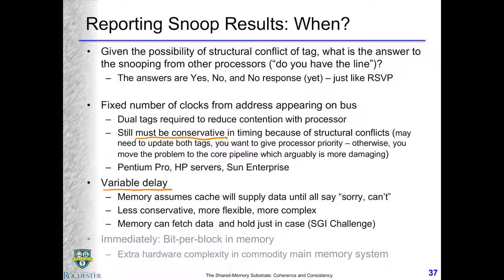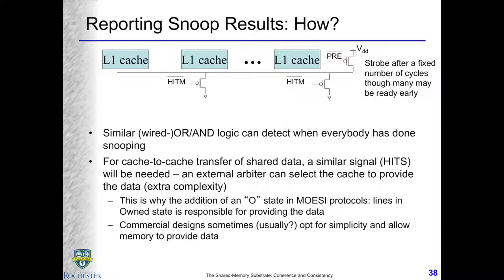There is a shared line that everybody uses to indicate they need more time. Your answer can be: yes I have it, no I don't have it, or no I don't know yet. The timing of when we get the result is not guaranteed to be like a fixed-latency cache check. In a data cache, you assume after a fixed number of cycles — say two — you either have the data (hit) or you don't (miss). With snooping, after a fixed amount of cycles you may not know the snoop result.